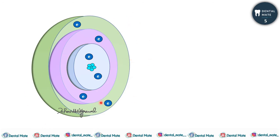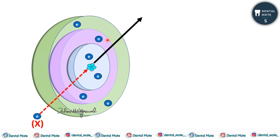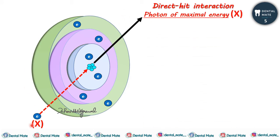Sometimes the electron with X amount of energy directly hits the nucleus. It directly hits the nucleus of the target atom, and what happens is it produces a photon of maximal energy, which is X, because all of the kinetic energy of this electron is converted into an X-ray photon. A photon of maximal energy equal to X is produced. This type of interaction is called a direct hit interaction.